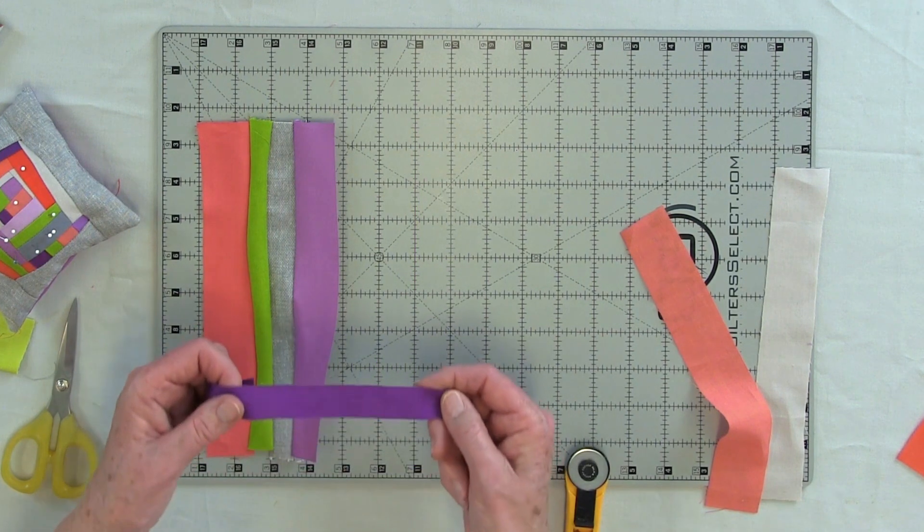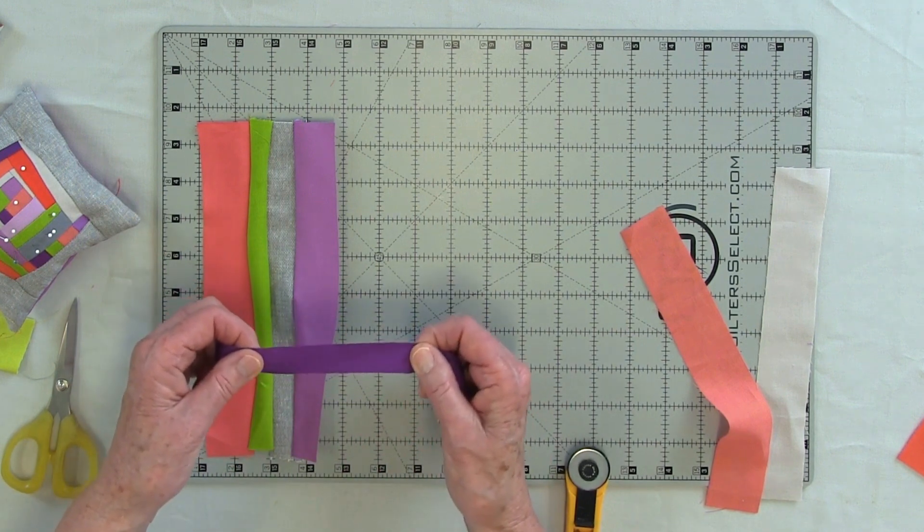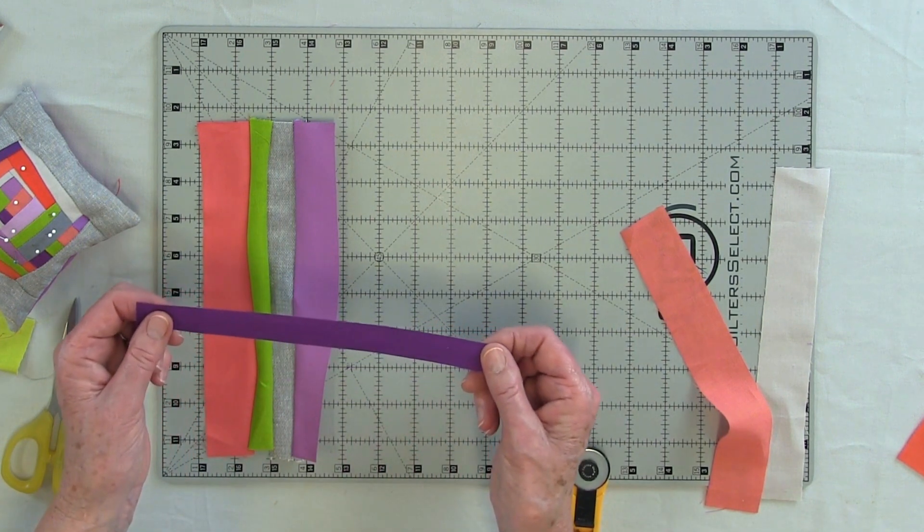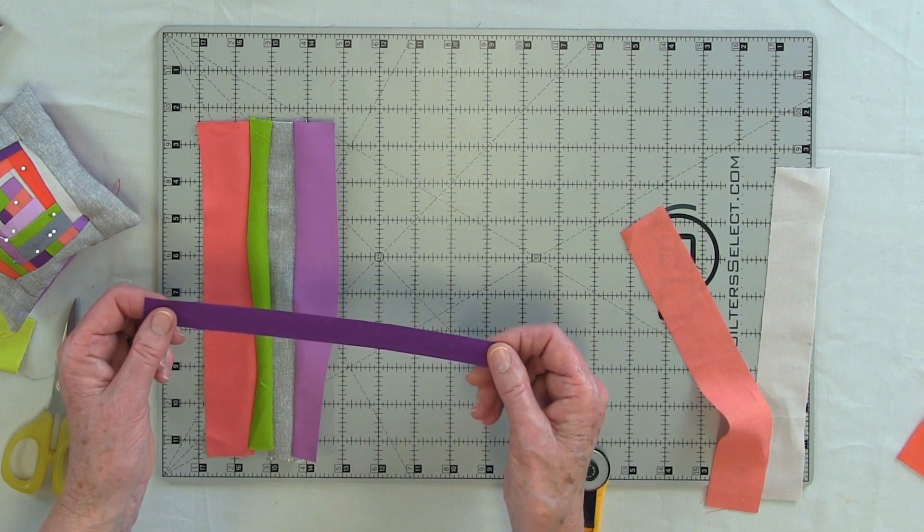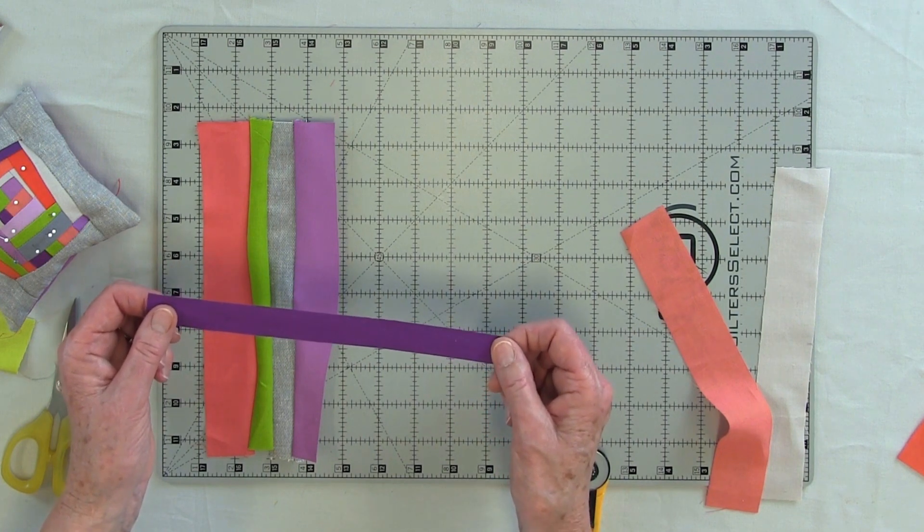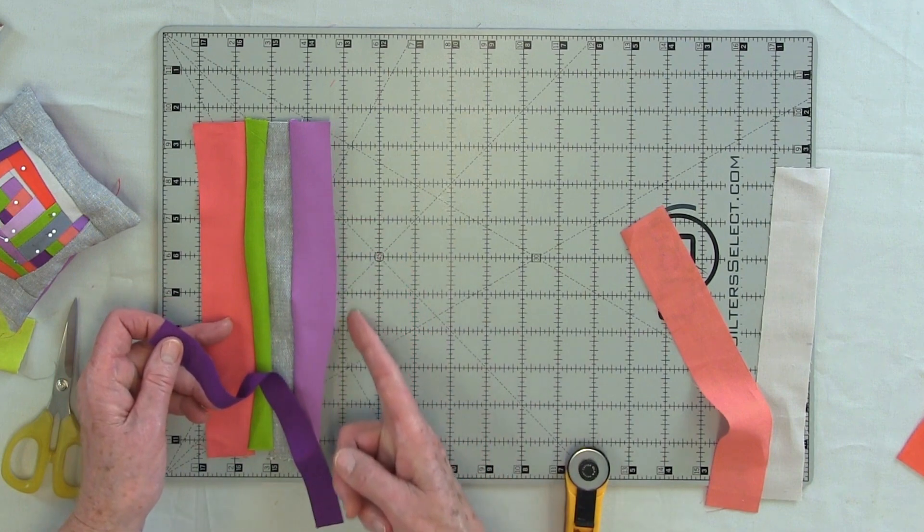But this is fabric that we're working with, and fabric has wiggle room, especially when it's only three-quarters of an inch wide. So I'm now going to stitch this straight piece to this curved piece.